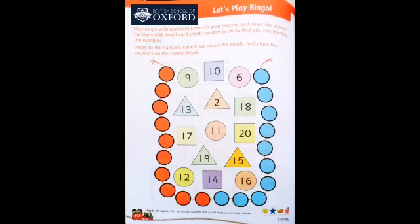Number nine is here in a circle — in a green circle. Now you have to count the beads first: one, two, three, four, five, six, seven, eight, nine. After counting the beads, you have to put number nine in the nine beads. Now again I am going to tell you the next one.